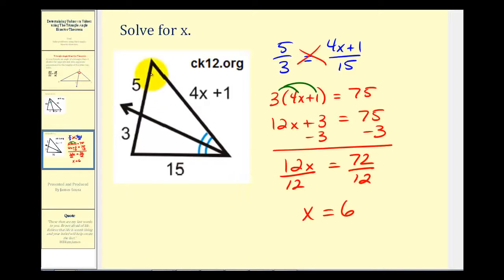So if we were asking to determine the length of this side, we would substitute 6 for X. We'd have 4 times 6 plus 1. So this side of the triangle would be 25 units long.